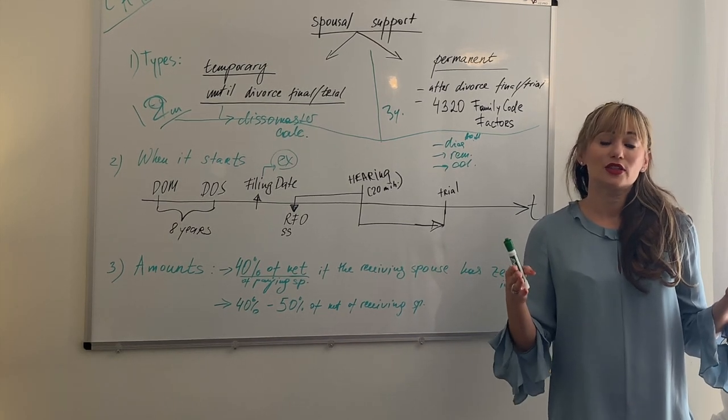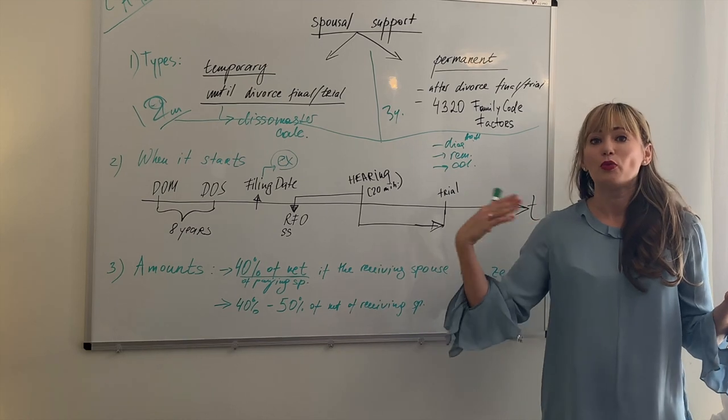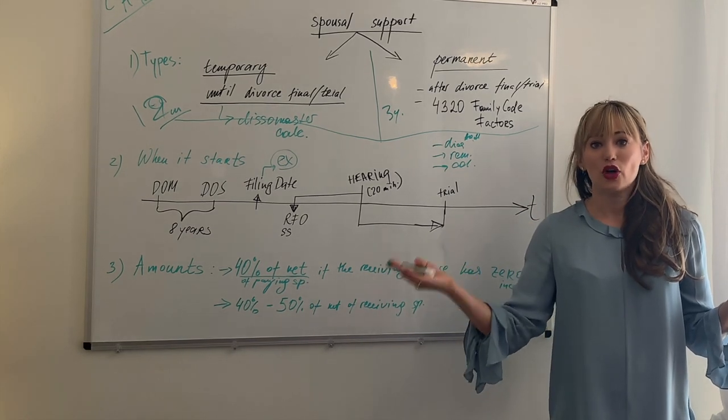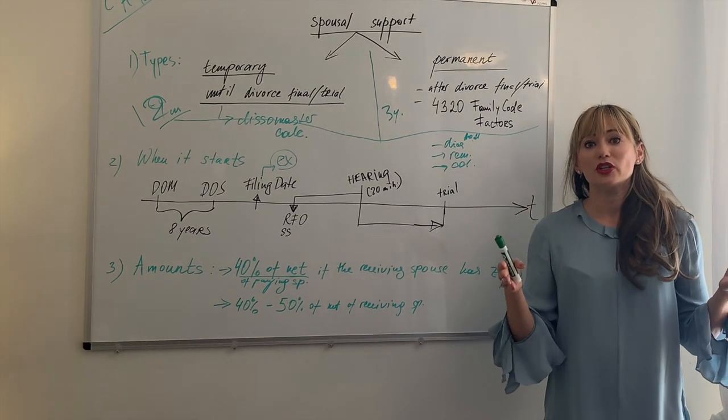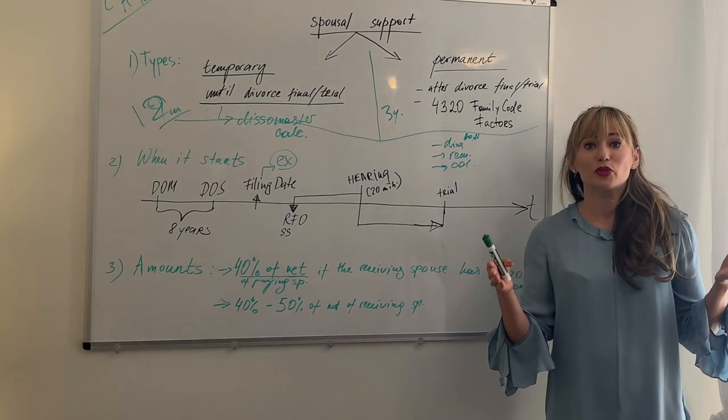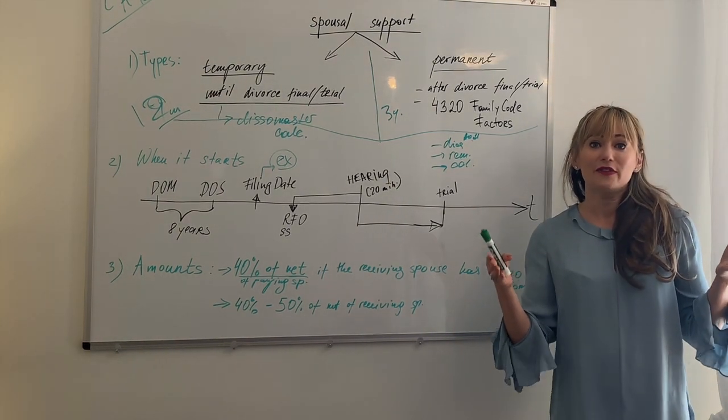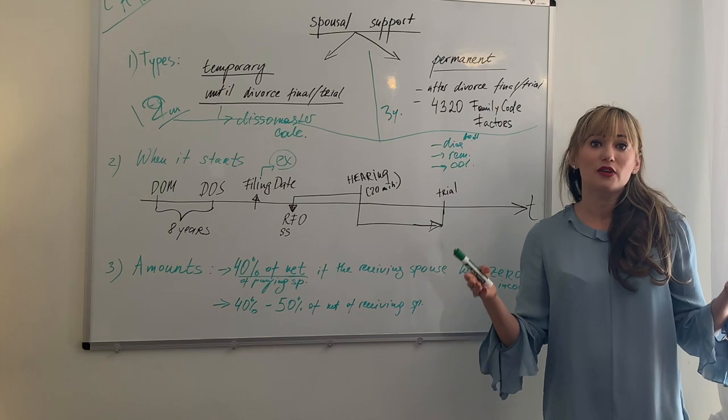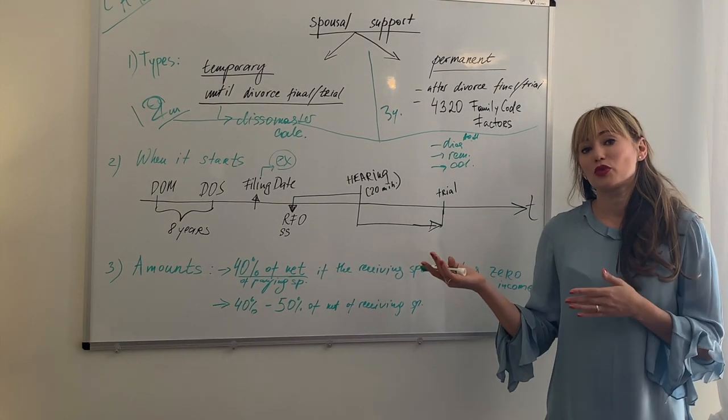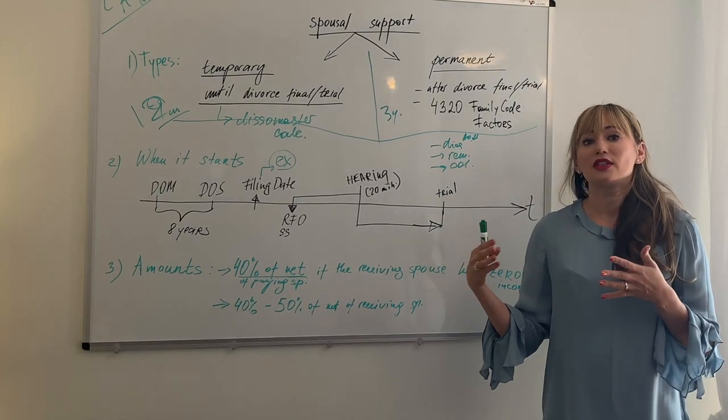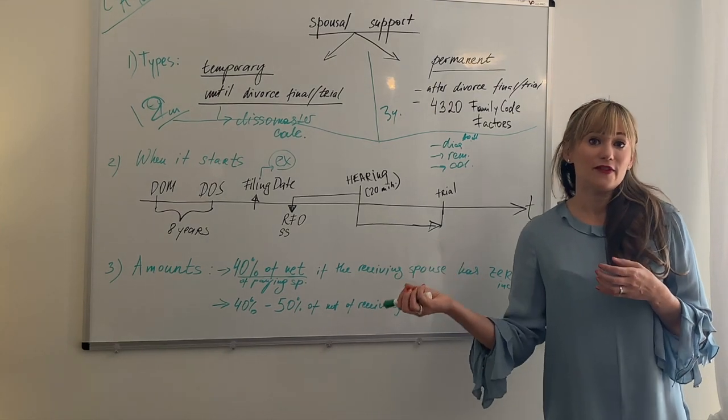Less than 10 years is considered short-term marriage. More than 10 years is long-term marriage. So if the marriage was less than 10 years, then the spousal support is for half of the length of the marriage, which would mean for five years. And if the marriage was over 10 years, then the spousal support is going to be indefinite.